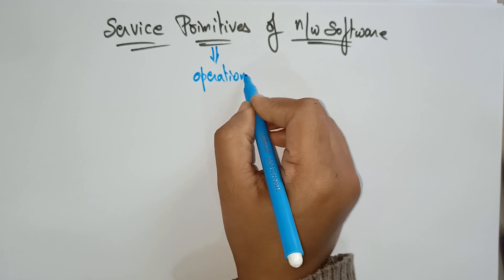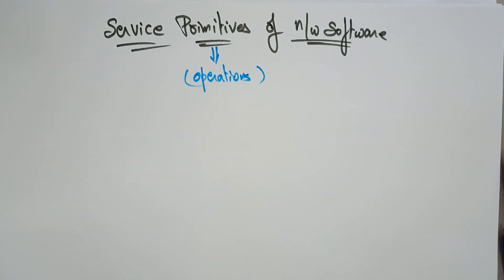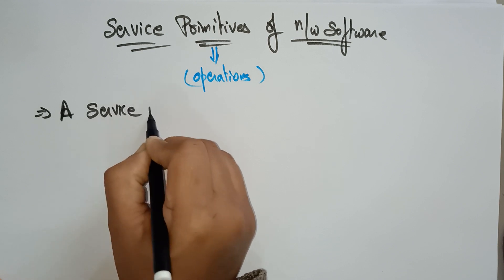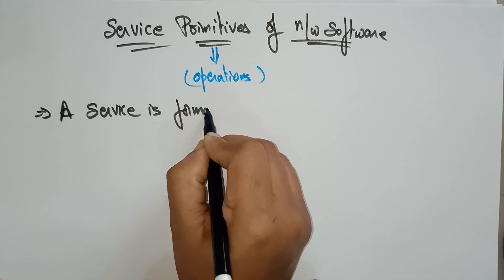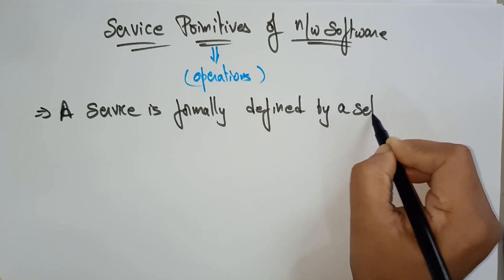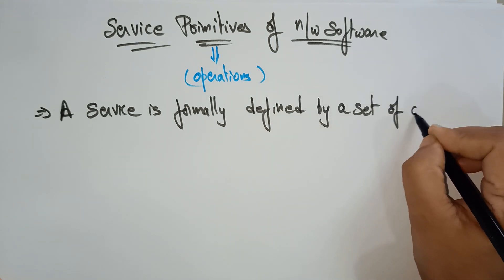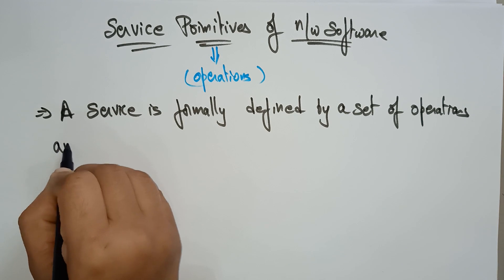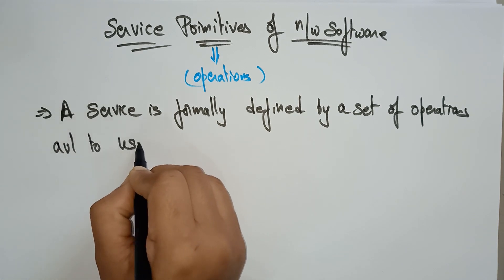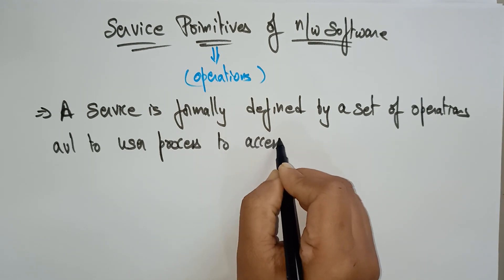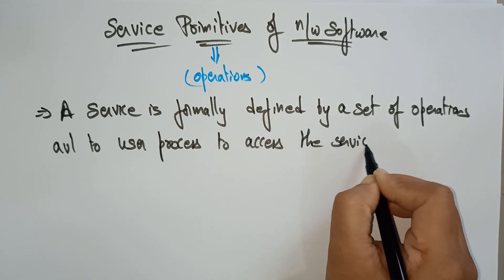Service operations. What type of service operations are performed on the network software? A service is formally defined by a set of operations — that is, a set of primitives — available to the user process to access the services.